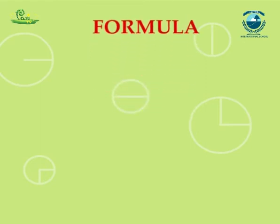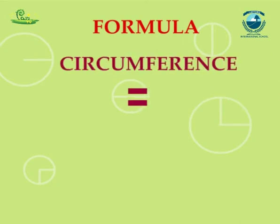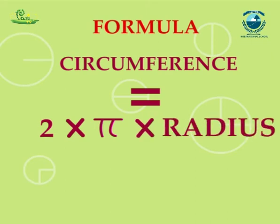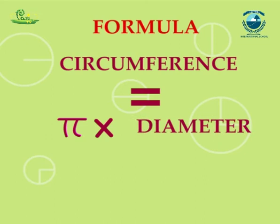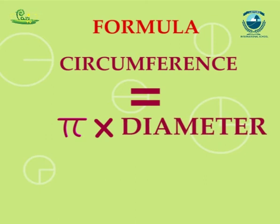Thus, the formula for finding circumference is: circumference equals 2 multiplied by pi multiplied by radius, which equals pi multiplied by diameter, where the diameter or radius is already given.